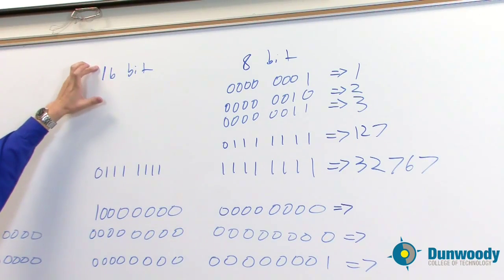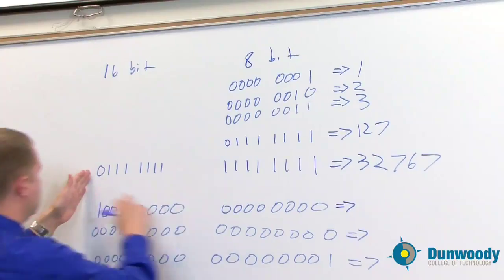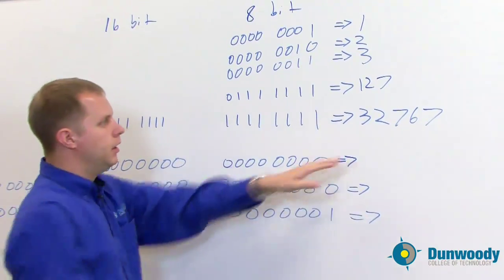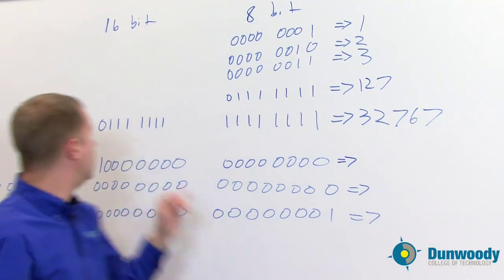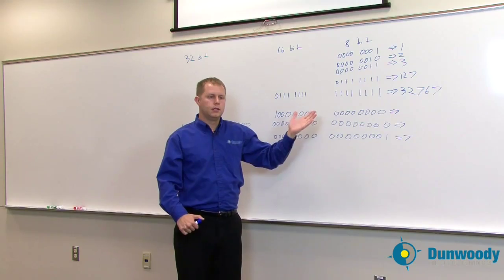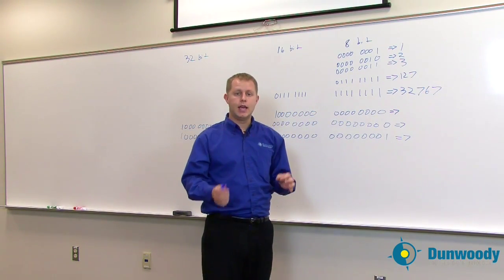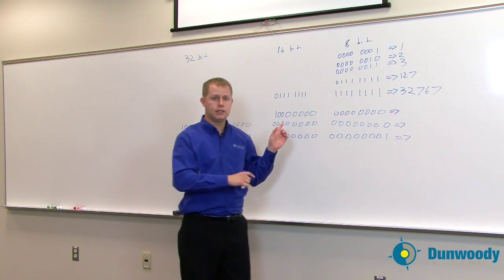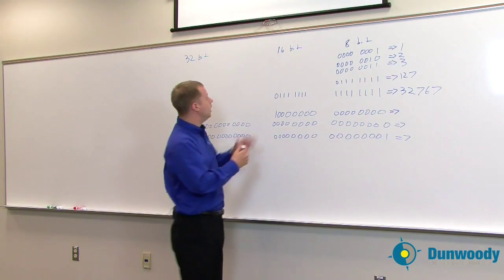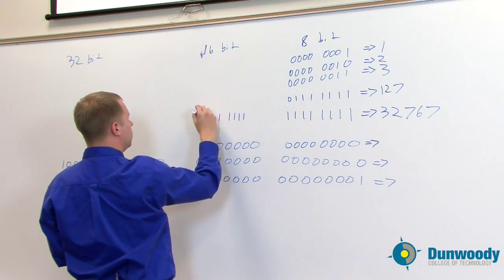Then you get to 16-bit computers — you add another set of 8. All of this is 0's with 1's following all the way behind. 32,767 is what this number represents. Now we've been counting — how do we represent a negative number? How does a computer recognize a negative number from this system? We do that using this last bit. In a 16-bit system, it would be this bit here.